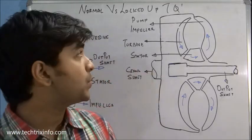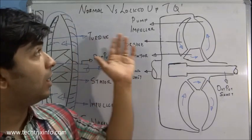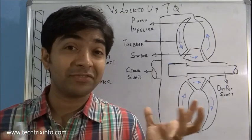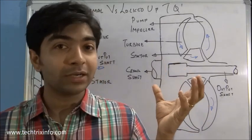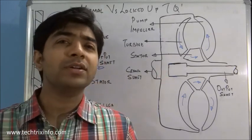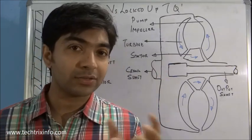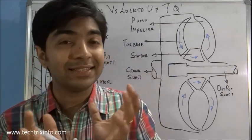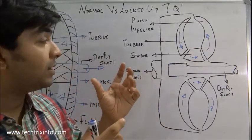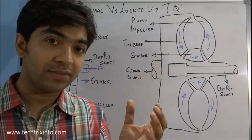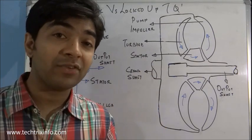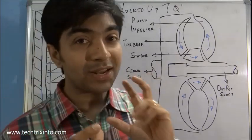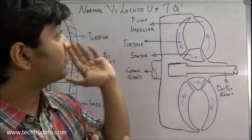Good morning and welcome back. This video is a comparison about normal and locked-up torque converters. You may already know about torque converters, but what are the differences between a normal torque converter and a locked-up torque converter? Torque converters are used in semi-automatic or automatic vehicles. The advantage of the torque converter is that it is a fluid coupling — it does not have a mechanical linkage between the engine and the gearbox.